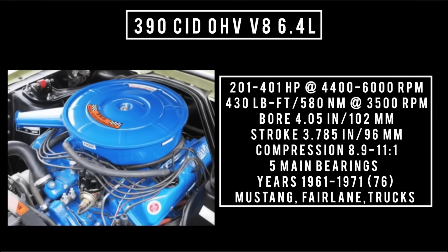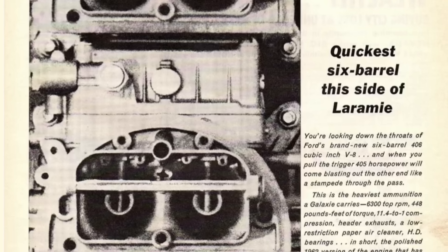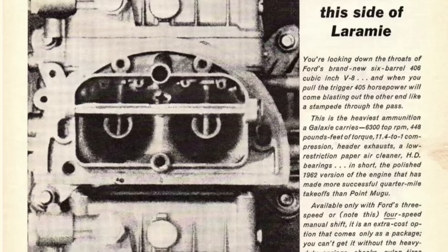Another staple for Ford was introduced in 1961: the 390 cubic inch displacement overhead valve V8, 6.4 liters. It produced anywhere between 201 up to 401 horsepower at 4,400 RPM, 430 pound-feet or 580 newton meters at 3,500 RPM, with a bore of 4.05 inches and a stroke of 3.785 inches. Compression could be anywhere between 8.9 to 11 to 1. Five main bearings. Used from 1961 through 1971 in cars and produced in trucks until 1976. It was the most common FE engine Ford ever made. The 390 was the last engine in the first generation; the first engine in the second generation required a new block casting design to support a larger bore and thicker walls.